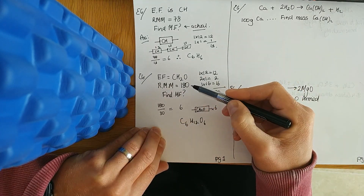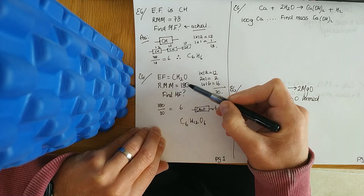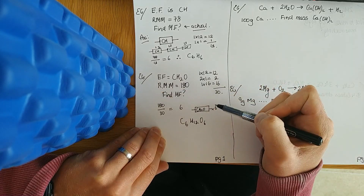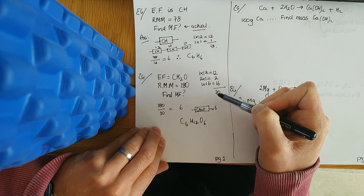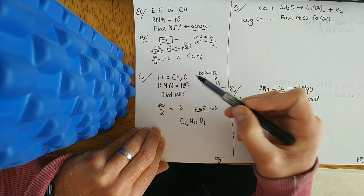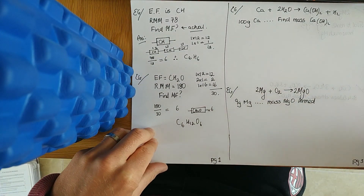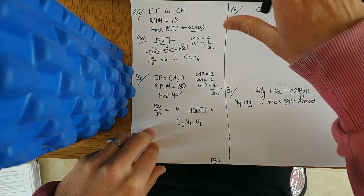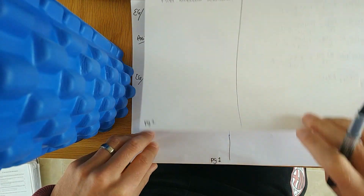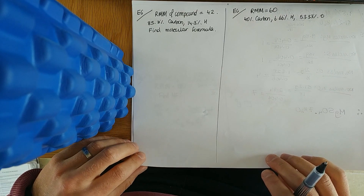Six CH2O units means six carbons, six by two is twelve hydrogens, and six oxygens: C6H12O6 — glucose. Sometimes the molecular formula works out to be the same as the empirical formula. If the relative molecular mass was 30 and each unit had a mass of 30, then that is also the molecular formula, so don't be put off by that.